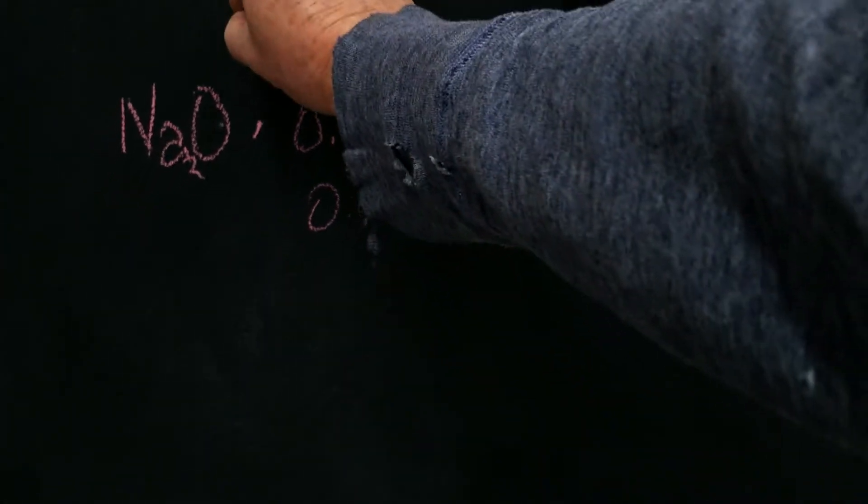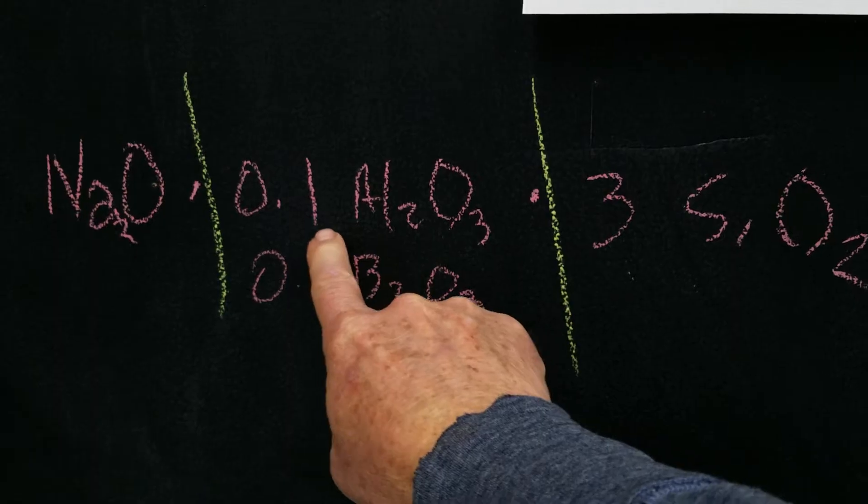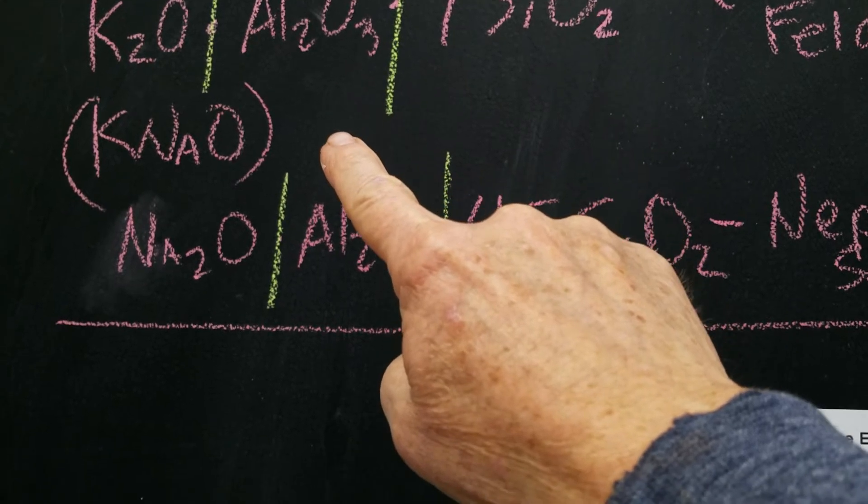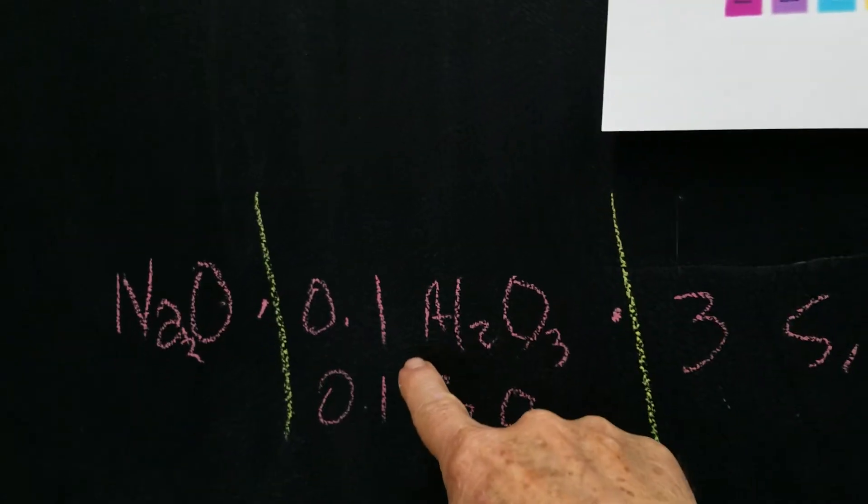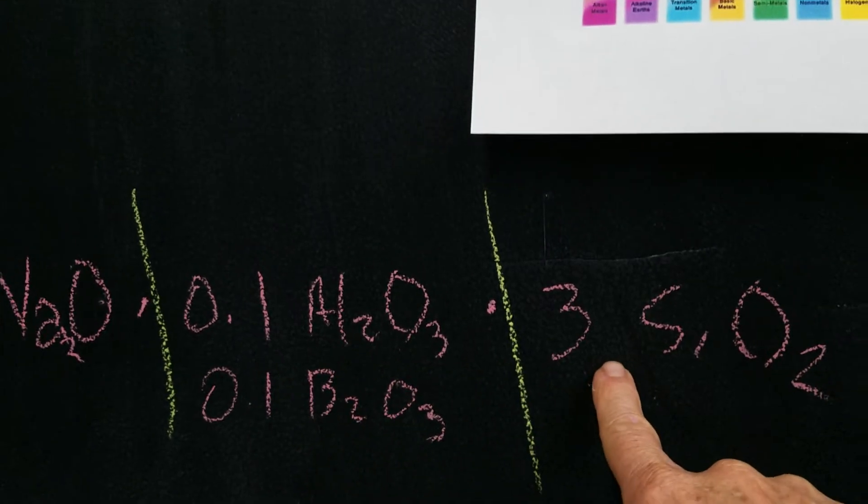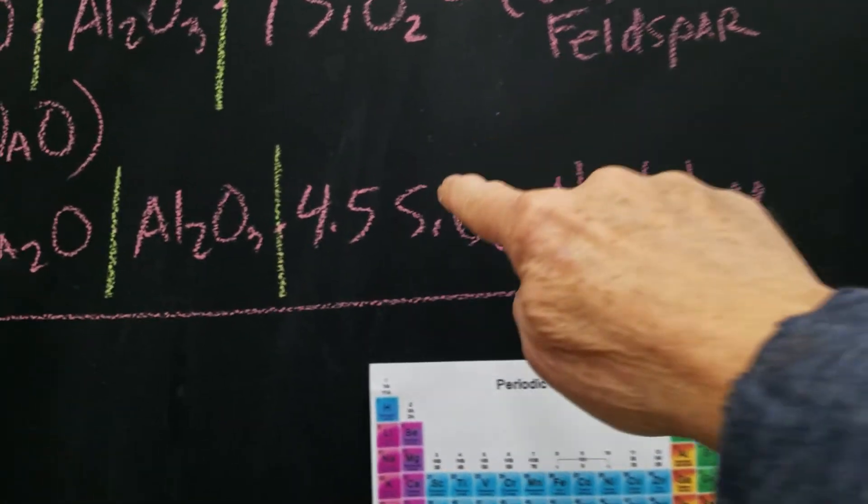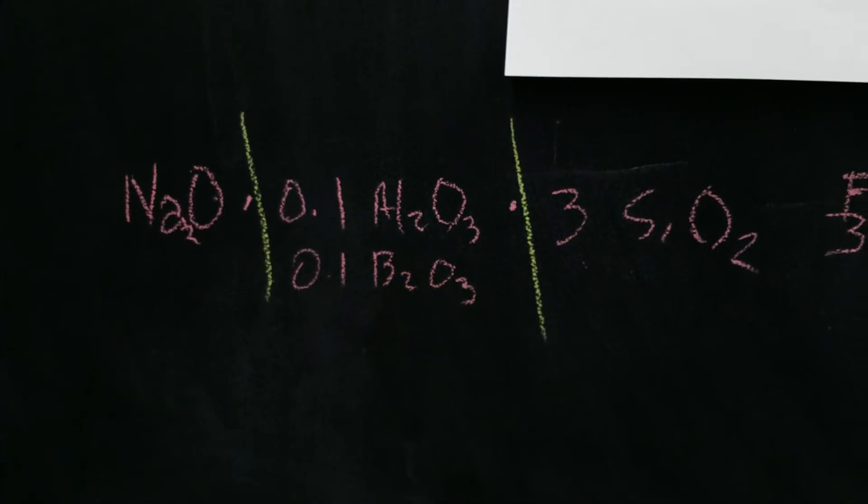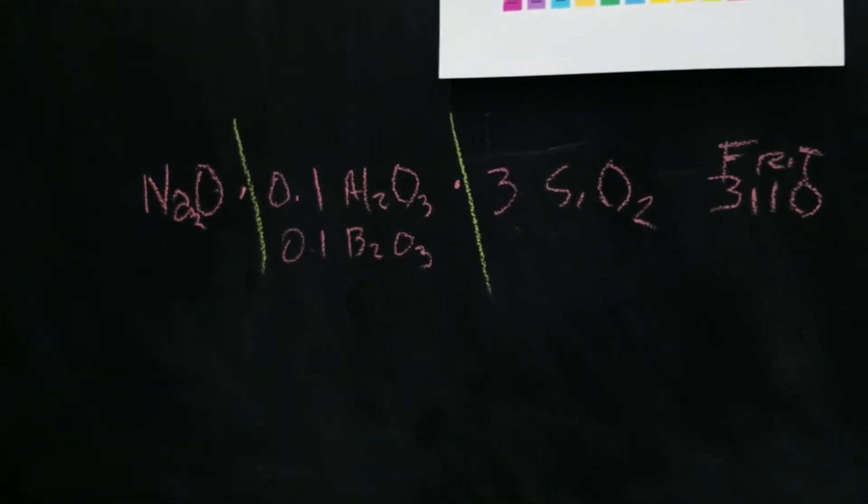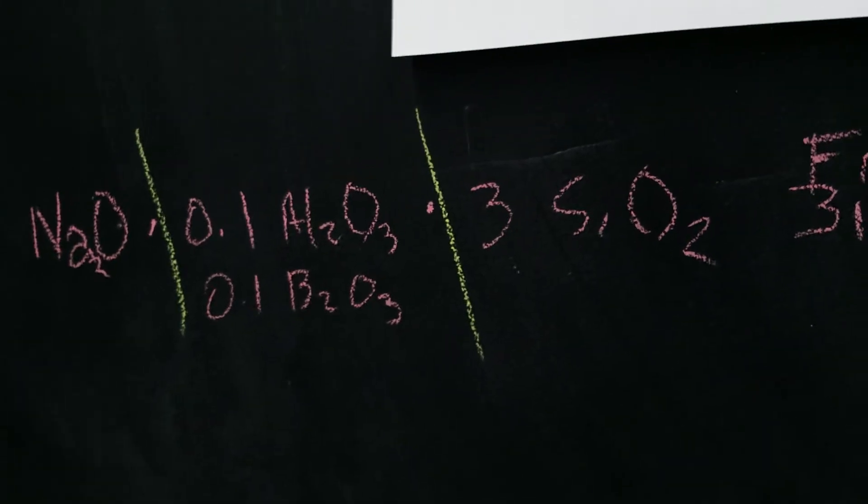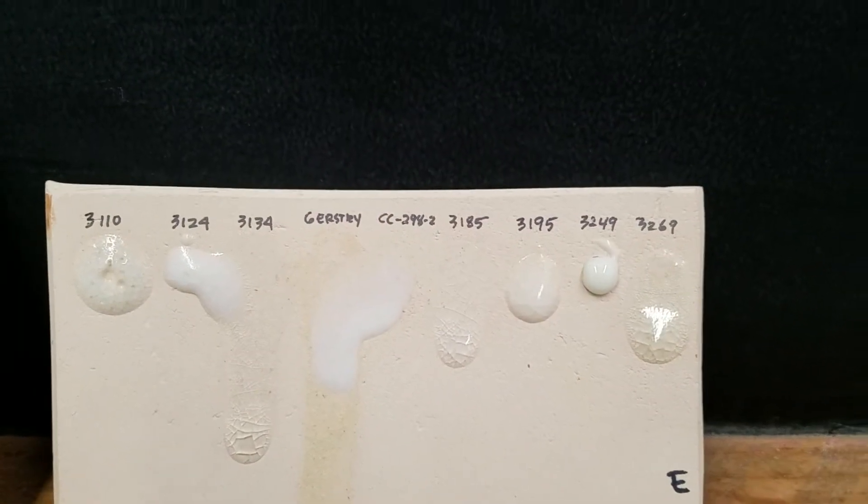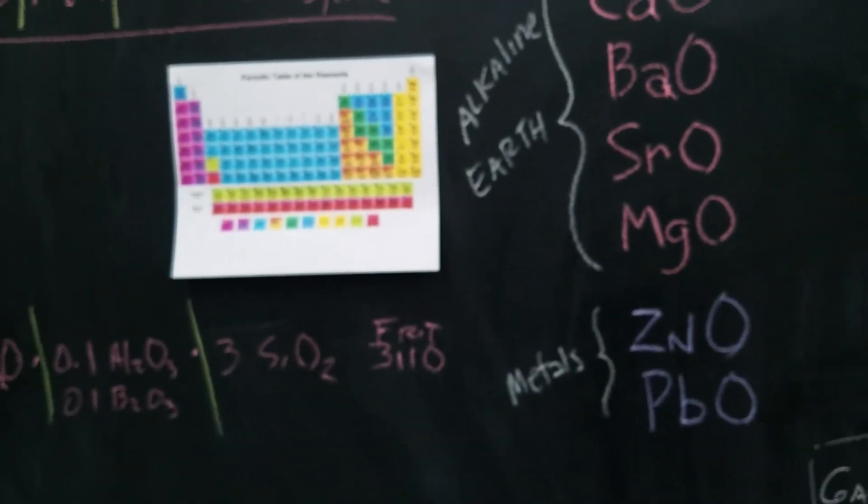Those would be represented here like this: sodium and then a very small amount of alumina. Up here in feldspar we had one alumina—that's assumed to be one. This is 0.1, and the silica is three. Up here we had 4.5 and seven, so here we have much less. Then we have some boron and a few other fluxes, which we'll get into a little later. But that's 3110, and here is the way 3110 will look and the other frits.